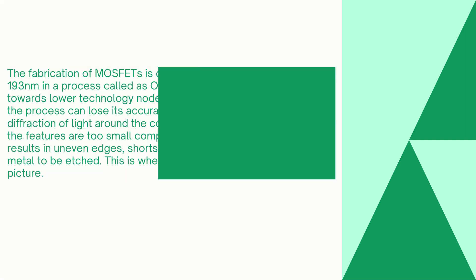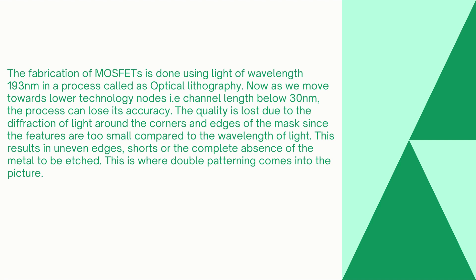Why are we going with double patterning? The fabrication of most places is done using light of wavelength around 130 nanometers, a process called optical lithography. As we move towards lower technology nodes with channel length below 30 nanometers, this process loses its accuracy due to diffraction of light around the corners and edges of the mask, since the features are too small compared to the wavelength of light.